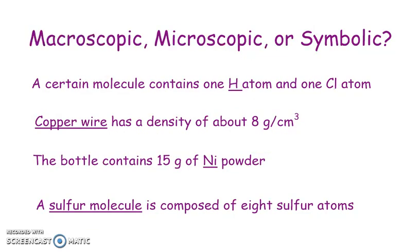So if we look at these four statements, there are underlined terms, and we're going to look at whether those are dealing with something that is part of the macroscopic, the microscopic, or the symbolic domain. The first statement says a certain molecule contains one H atom and one Cl atom. H is the chemical symbol for hydrogen, so this is part of the symbolic domain. However, this H is referring to a single atom of hydrogen, and an atom is part of the microscopic domain, so this H is symbolic of the microscopic domain.